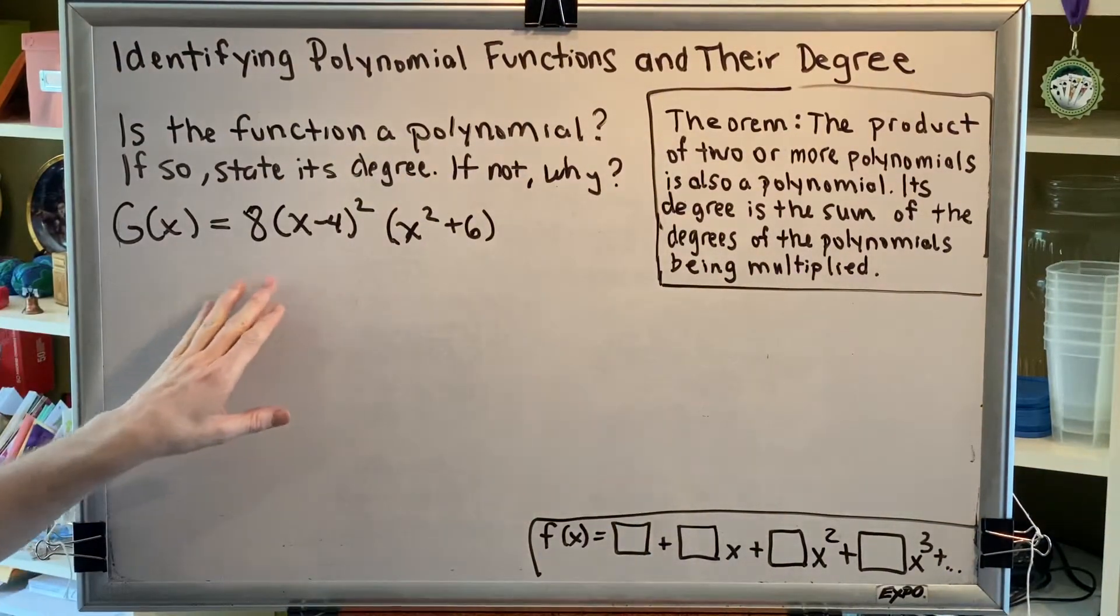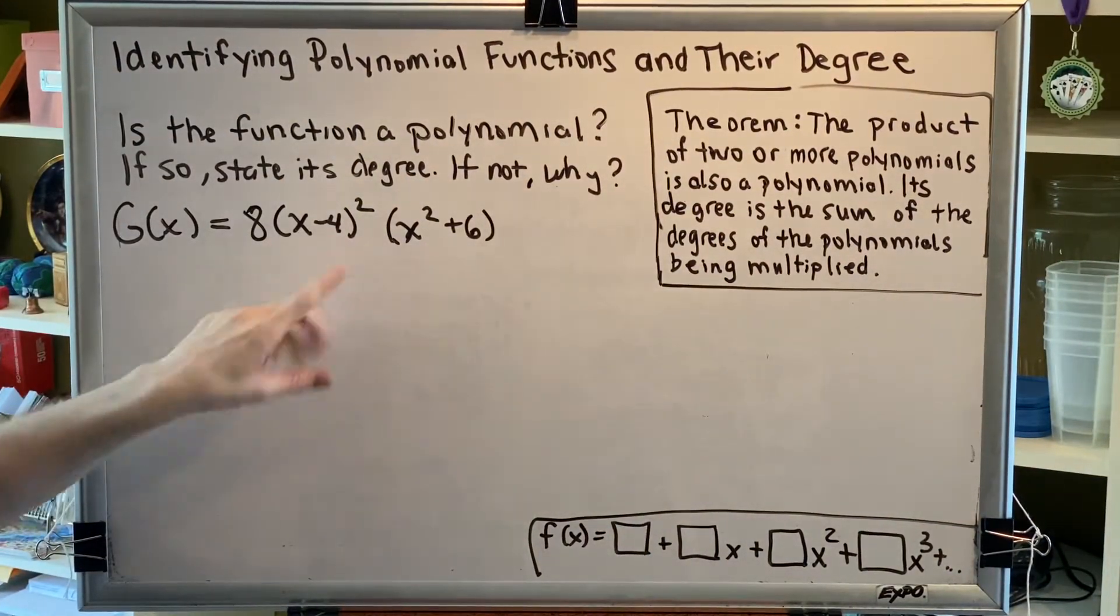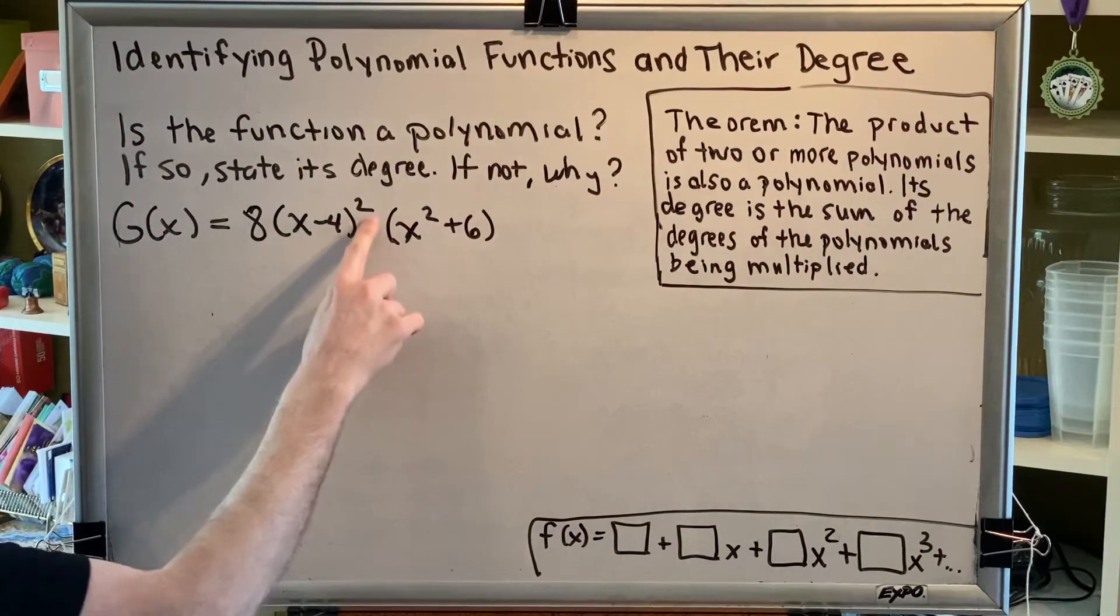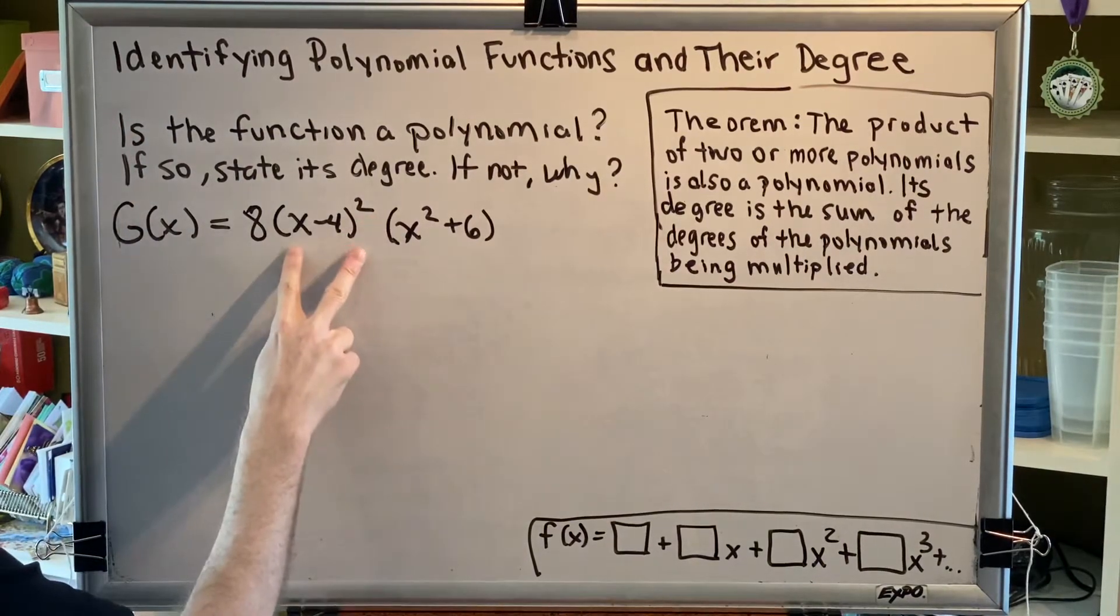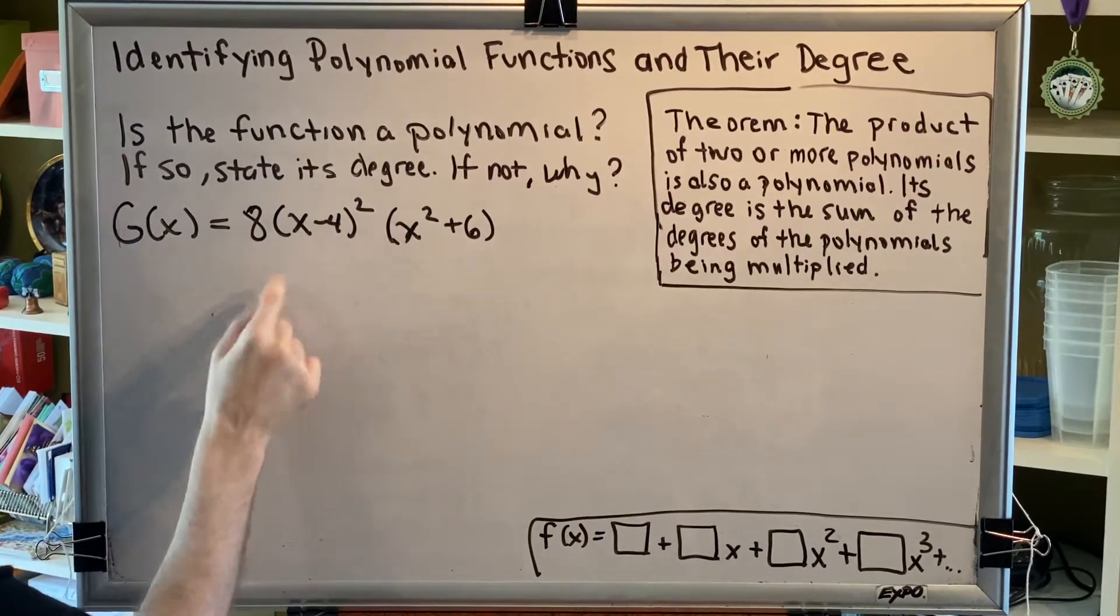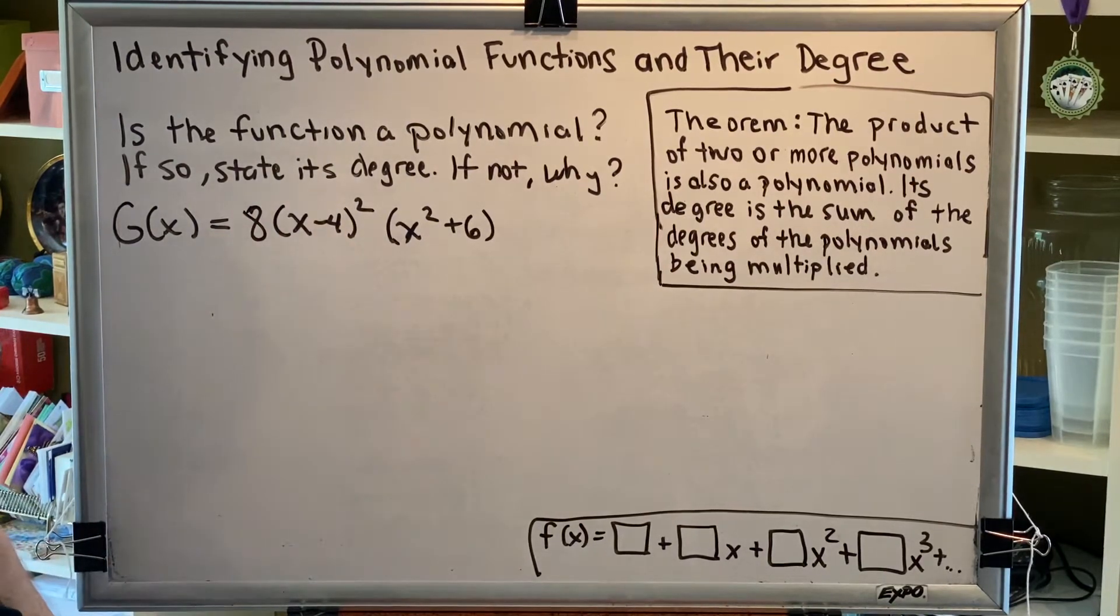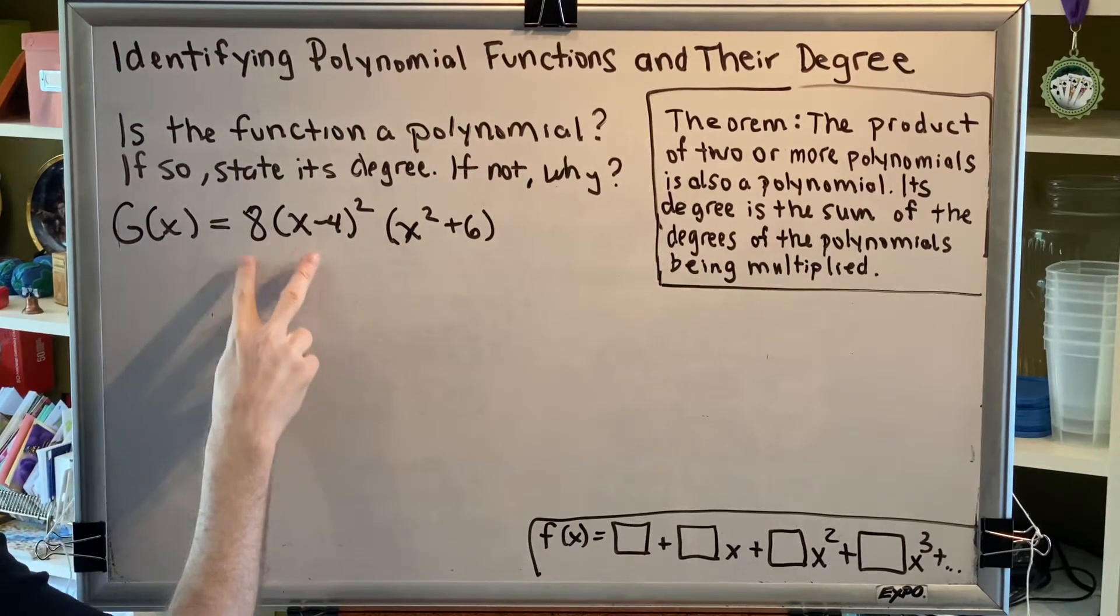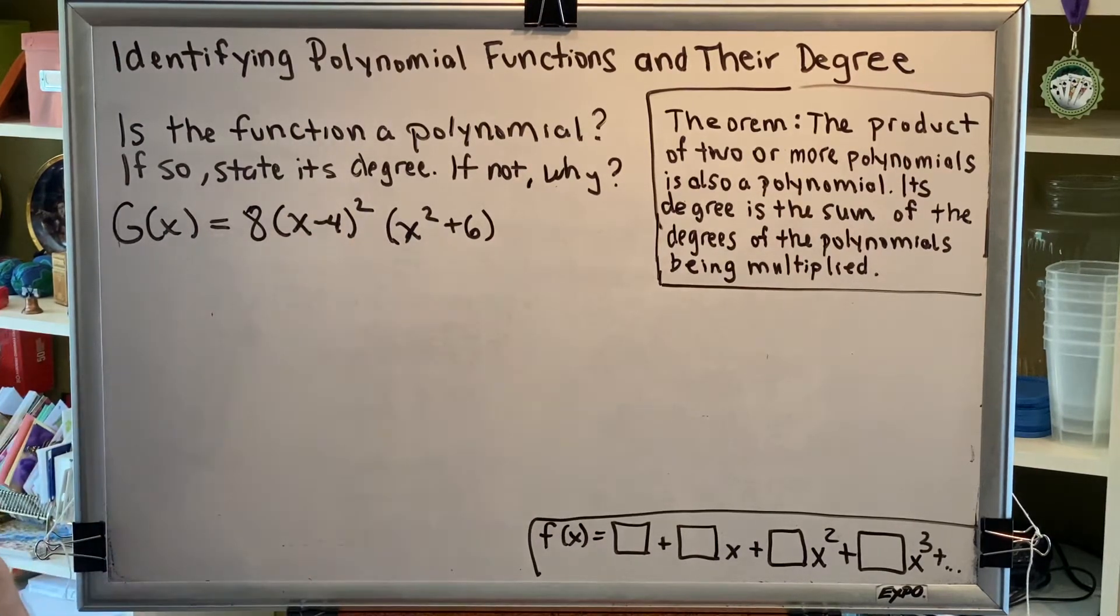One way to solve this problem would be to take all of these things and multiply them out. For example, this exponent of 2 means we have to multiply x minus 4 times another x minus 4. You can do 8 times x minus 4 with the distributive property, take that result and multiply it by the other x minus 4 with foil,